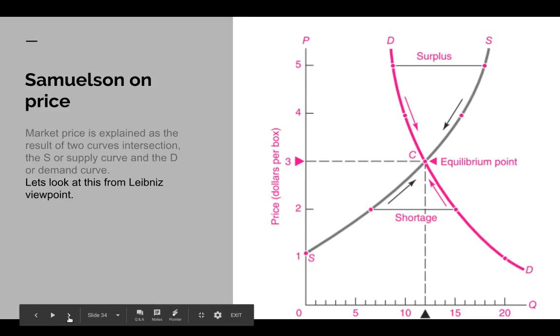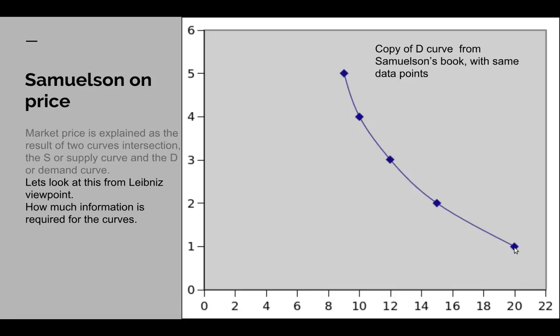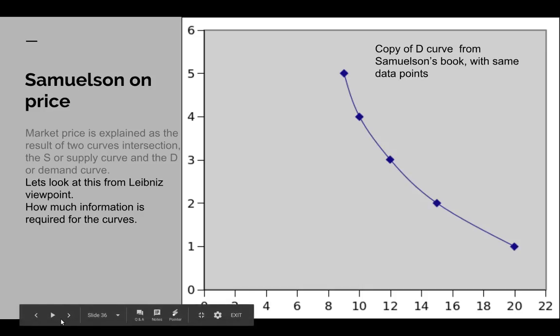Now, let's look at this Samuelson story from the standpoint of Leibniz. How much information is required for the curves? This is a photograph from his book. I photographed his book, and these are the actual numbers he gives. So, I've re-graphed it myself. Now, I took the data points and told Gnumeric to draw a smooth curve through them. How much information is required for the curves? Well, Gnumeric used a cubic spline to do that.